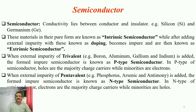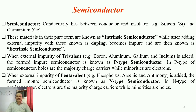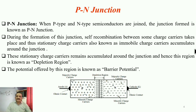When external impurity of pentavalent nature — examples are phosphorus, arsenic, and antimony — is added to the intrinsic semiconductor, the resulting impure semiconductor is known as an N-type semiconductor. In N-type semiconductors, electrons (negative charge carriers) are the majority carriers, and holes are the minority carriers.